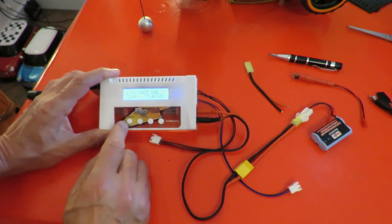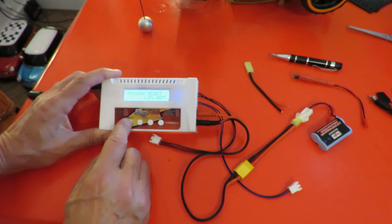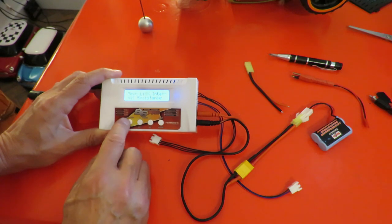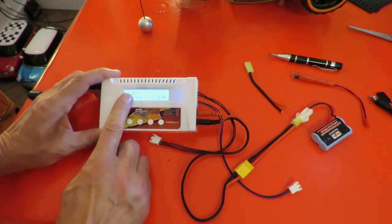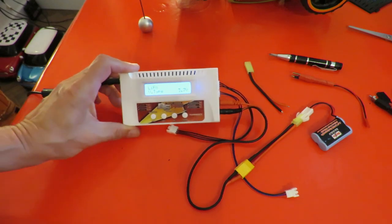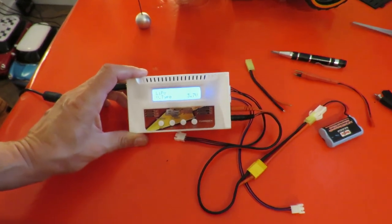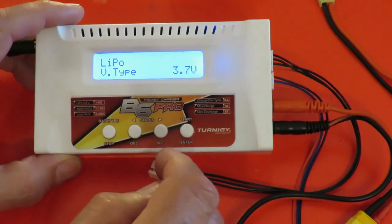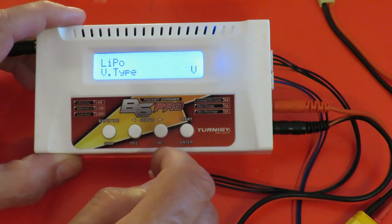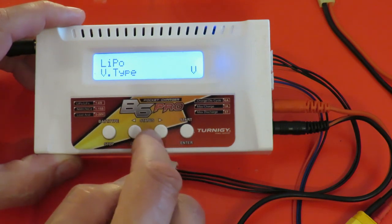So we need to set this one to lithium-ion, if I can remember how to do it. That's it, it's currently on LiPo, I don't know if the camera can see that. Now LiPo, press start, lets me change the voltage.